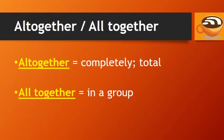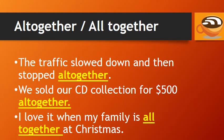Altogether and all together. The word 'altogether' can mean completely or refer to a total, and 'all together' means in a group. For example: 'The traffic slowed down and then stopped altogether' means stopped completely. 'We sold our CD collection for five hundred dollars altogether' means a total of five hundred dollars. 'I love it when my family is all together at Christmas' means my family is together in a group, close to each other.